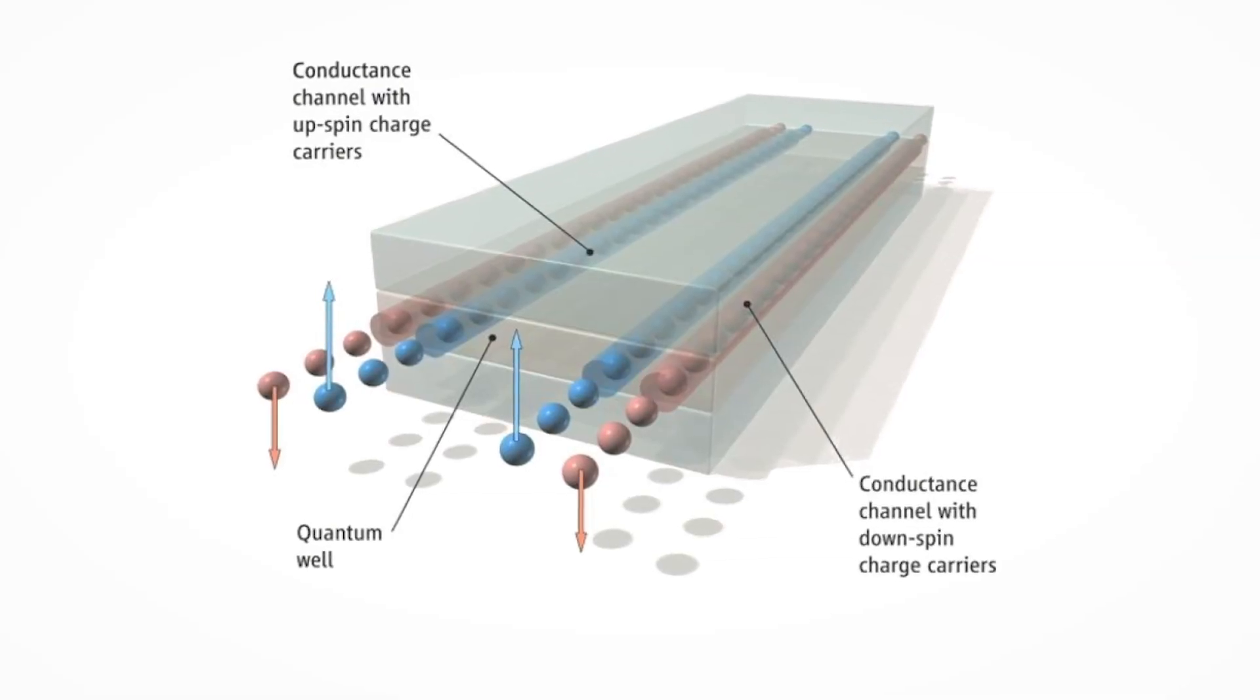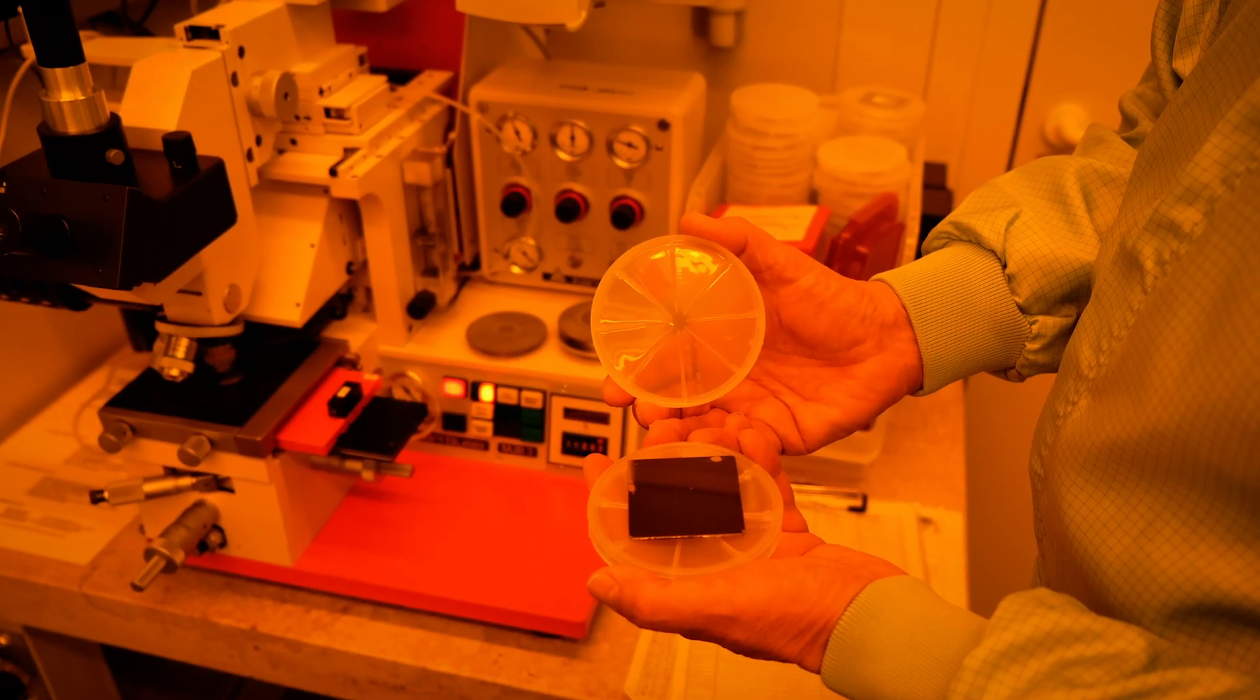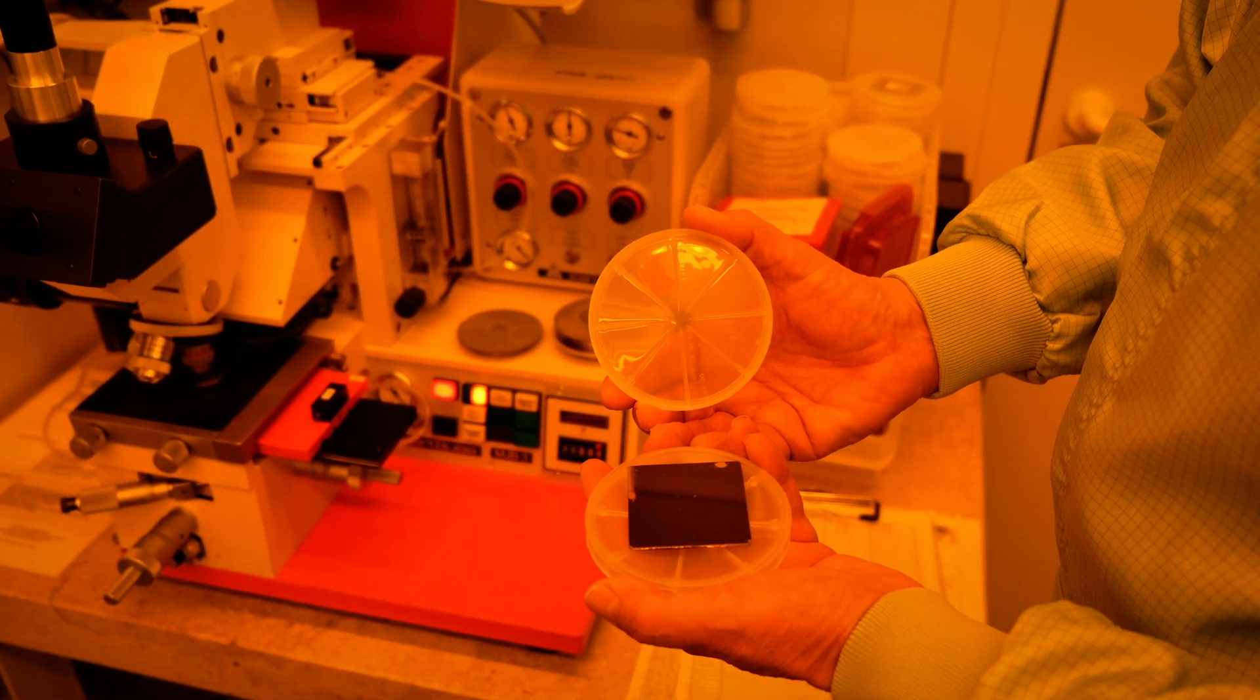So we have this material, mercury telluride, which has very strong spin-orbit coupling, which made it actually interesting for us. But we also knew that this material had this inverted band order, and because of that, it had very interesting surface states.